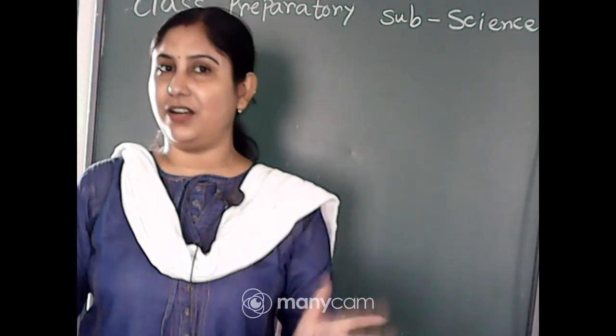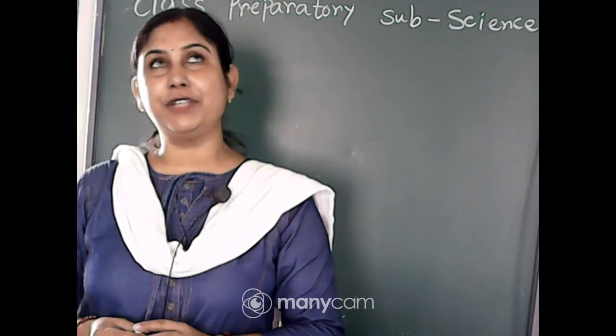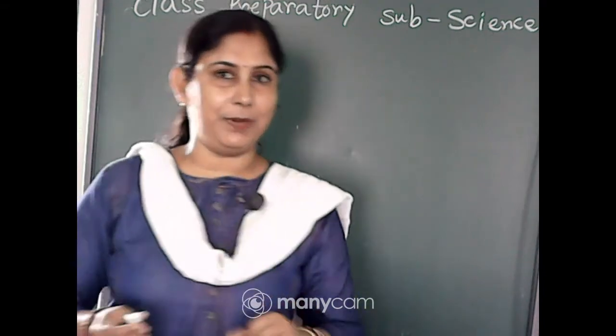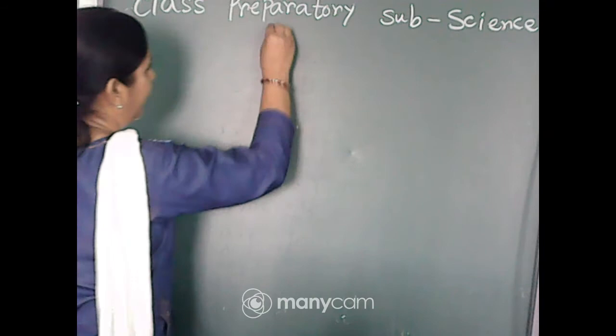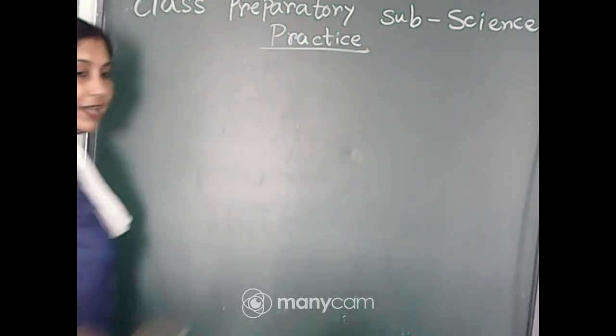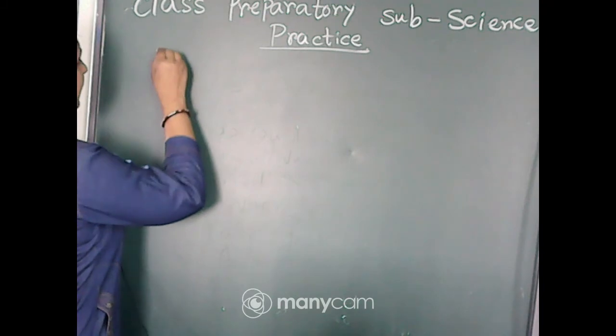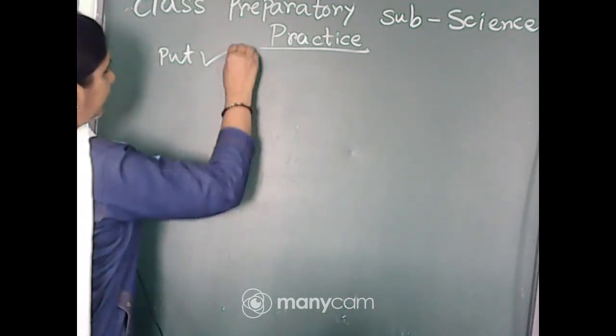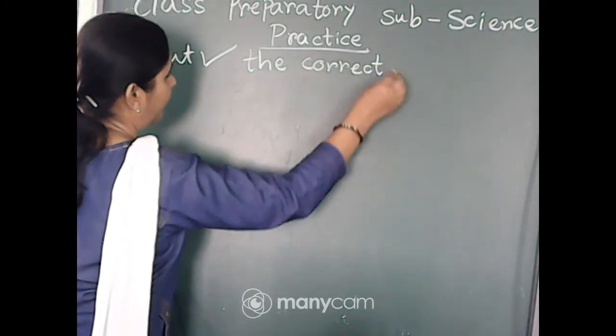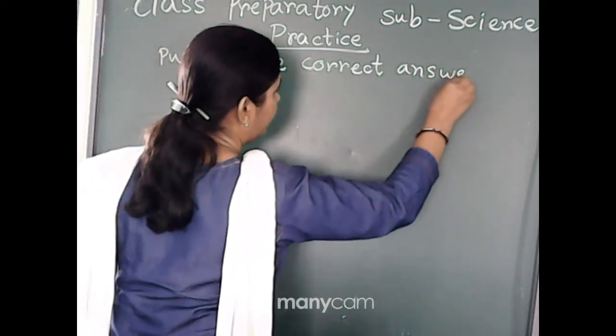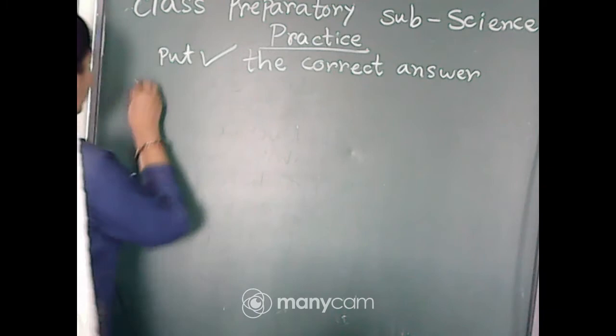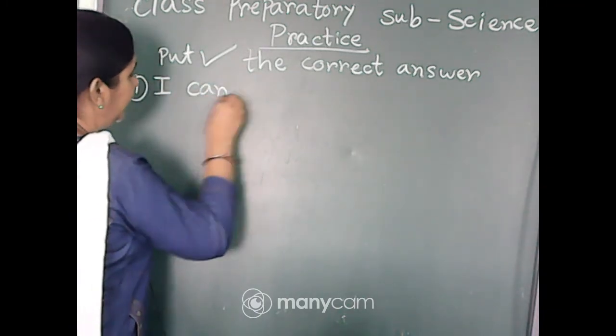So let us start with picture words. We learned all those things one by one. Today we will practice with animals and our body parts. This is our practice work. Number one, we will write down: put tick the correct answer.